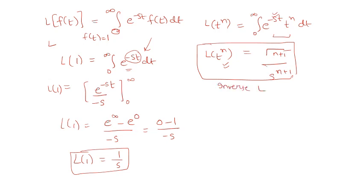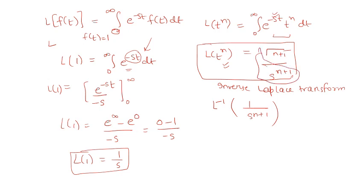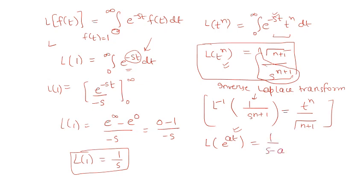For inverse Laplace: if we want to find the inverse Laplace of 1/s^(n+1), the function going the other way gives t^n divided by gamma(n+1). You can learn many such formulas. For example, the Laplace of e^(at) is 1/(s−a), meaning the inverse Laplace of 1/(s−a) is e^(at).